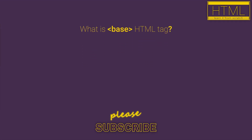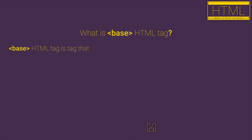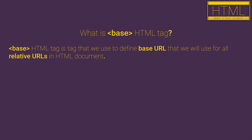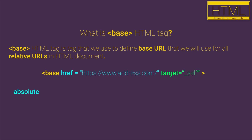What is the base HTML tag? The base HTML tag is a tag that we use to define a base URL that will be used for all relative URLs inside of an HTML document. This is probably confusing for most of you because you don't know what absolute URLs and relative URLs are.